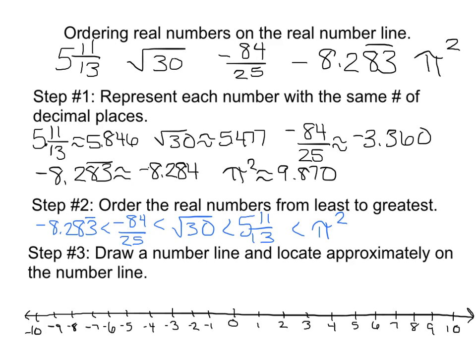So that means that I'm going to be to the left of my negative 8. And it's going to be pretty close to 8 because it's 0.2. I'm not very accurate here with my stylus. So this is negative 8.283 with the 8, 3 repeating. The next one is my negative 84 over 25.